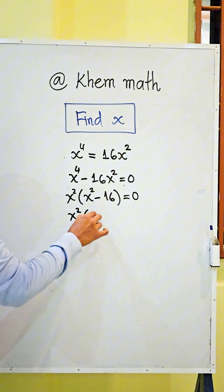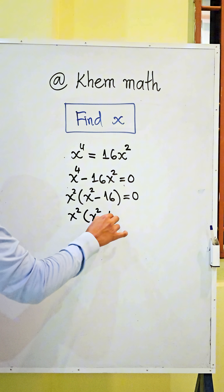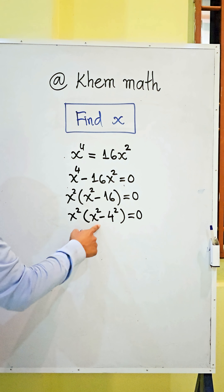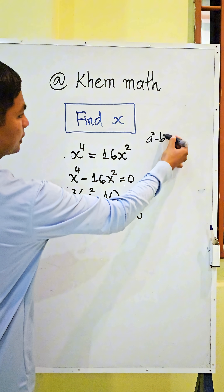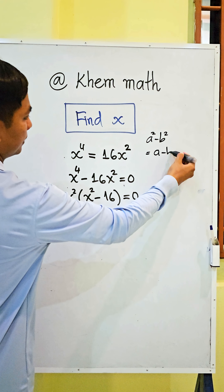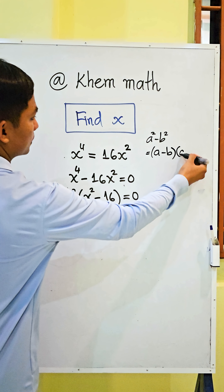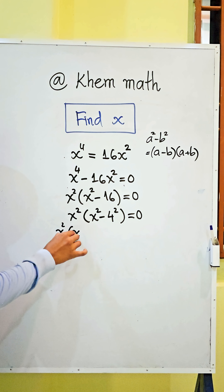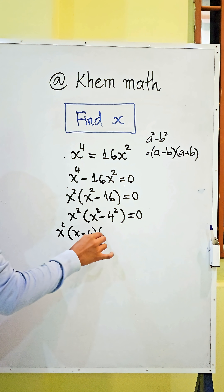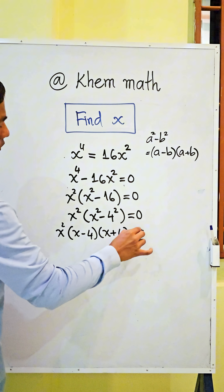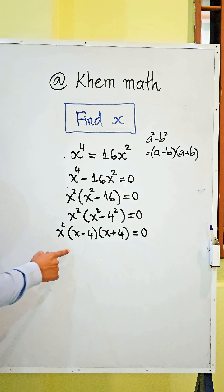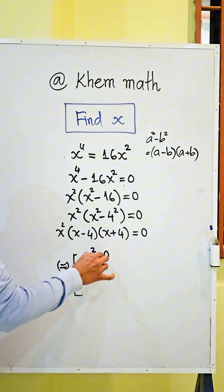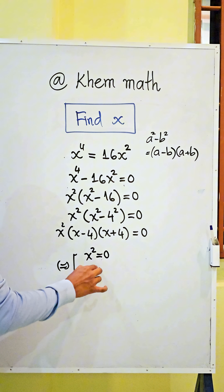So we get x²(x² - 4²) = 0. Here we use the difference of squares formula: a² - b² = (a - b)(a + b). So we get x²(x - 4)(x + 4) = 0.